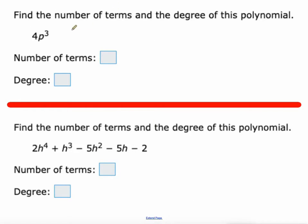All right, so find the number of terms and the degree of this polynomial. Okay, so this has got one term. 4p³ is a term. We'll see more in the future. As far as its degree, it's just that exponent right there. This is what we call third degree.